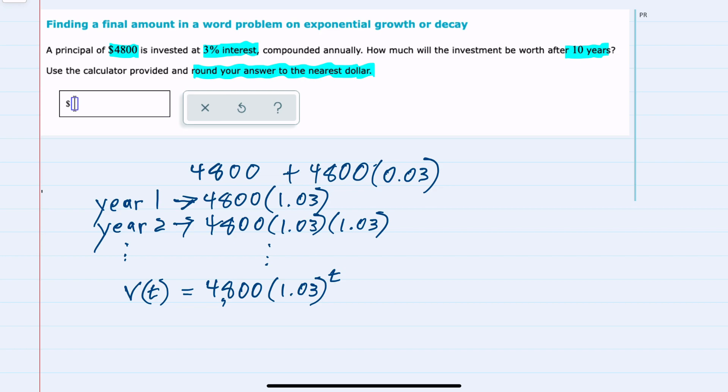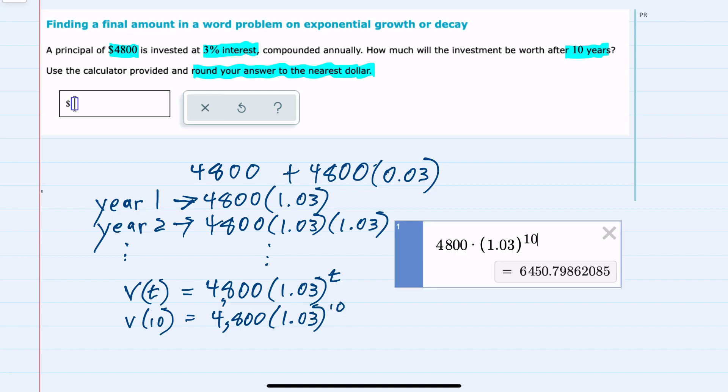So, for example, for 10 years, we would have the original $4,800 times 1.03 raised to the 10th power.